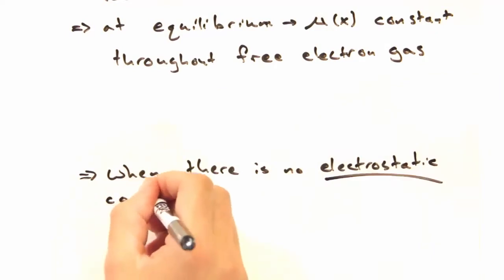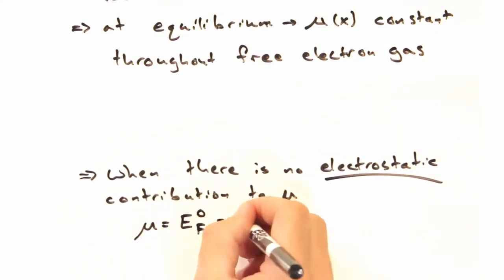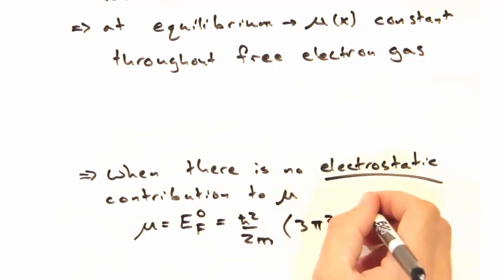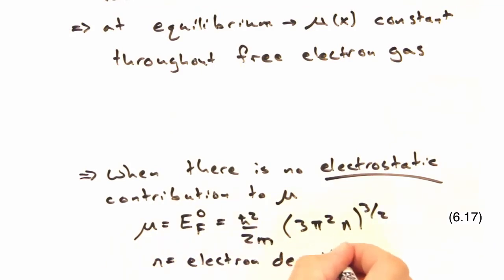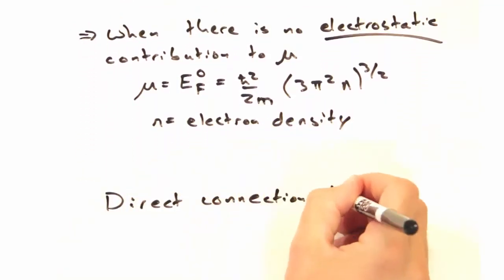Finally, we know that when there's no electrostatic contribution to the chemical potential, the chemical potential can be approximated as the Fermi level, which we can connect to the electron density, n.